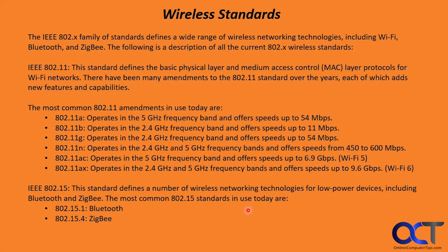Here's a breakdown of what the graphic showed. The IEEE 802.11 family of standards defines the basic physical layer and MAC layer protocols for Wi-Fi networks, with many amendments adding new features over time — including variants A, B, G, N, AC, and AX with their various speeds. For example, 802.11n operates in both the 2.4 and 5 gigahertz bands at 450 to 600 megabits per second, all the way up to the current Wi-Fi 6 standard operating at 9.6 gigabits per second.